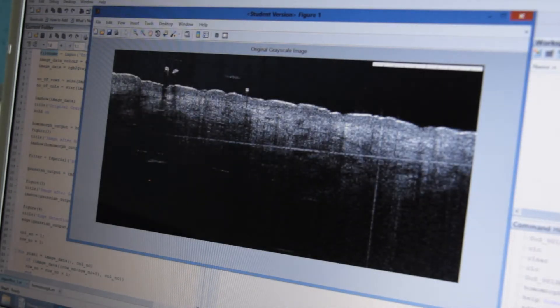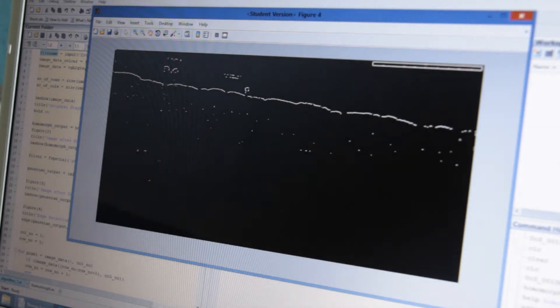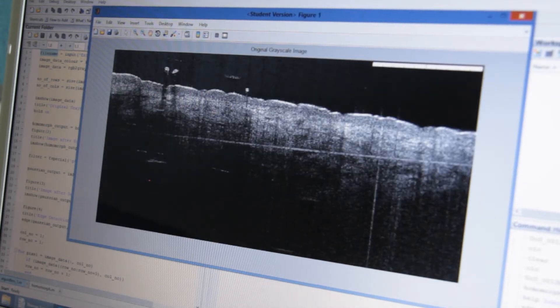The filters that we apply as part of this preprocessing include initially a homomorphic filter as well as a Gaussian filter on the log of the image.